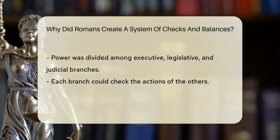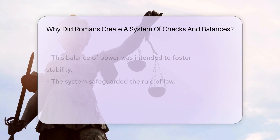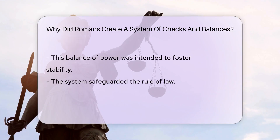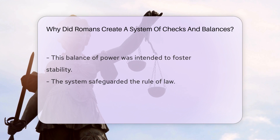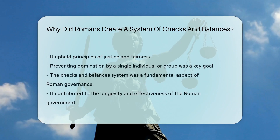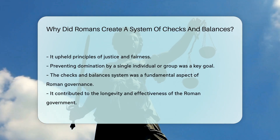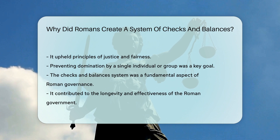By dividing power among different branches, such as the executive, legislative, and judicial, the Romans sought to maintain a system of government where each branch could check the actions of the others, balancing power and fostering stability. This system helped safeguard the rule of law and uphold the principles of justice and fairness within the Roman government.